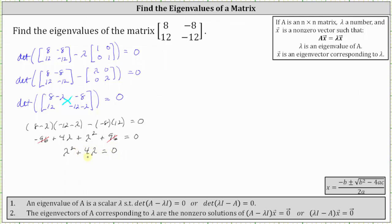This is factorable. The greatest common factor is λ. Factoring out λ, we have λ(λ + 4) = 0.